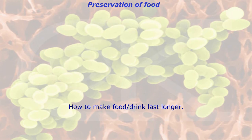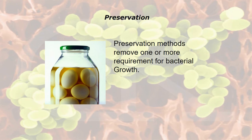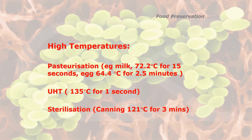Food preservation: how do you make food or drink last longer? Preservation methods remove one or more requirements for bacterial growth — food, moisture, warmth, or time. High temperature preservation includes pasteurization — for example, milk is heated to 72.2°C for 15 seconds, and egg to 64.4°C for two and a half minutes. Anything above 63°C is classed as pasteurization temperature. Then there's Ultra Heat Treatment at 135°C for one second, and sterilization with canning at 121°C for three minutes or more. These temperatures are just for interest — you won't have to remember them.